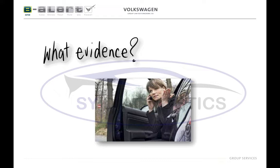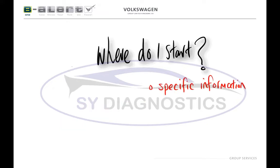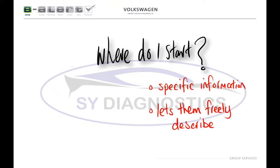Sometimes these symptoms are obvious — maybe the vehicle is misfiring or leaking fluid — and this obviously helps you to locate the fault. But what about those jobs where they turn up and the fault is no longer present? This is when we must ensure we gather all the evidence that's convinced the customer they've got a problem. The most common question at this point is: where do I start? Clearly, to find out what symptoms a customer has experienced, you need to ask some questions, but you need to be asking them in a structured way.